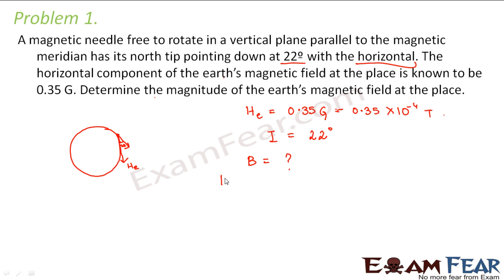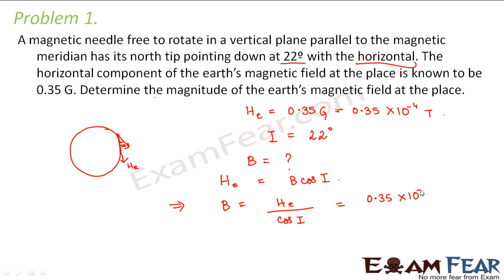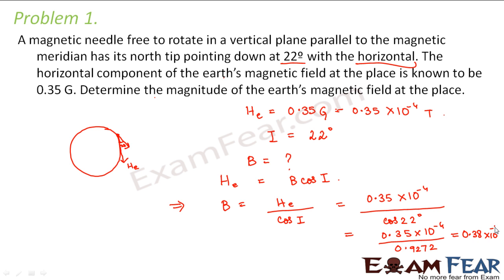We have to calculate the magnitude of the Earth's magnetic field at that place. According to the definition of the horizontal component: BH = B cos(i). From here we can directly calculate B as BH divided by cos(i), which comes out to be 0.35 × 10⁻⁴ divided by cos 22°. Cos 22° is 0.9272, so B comes out to be 0.38 × 10⁻⁴ tesla, or 0.38 gauss.